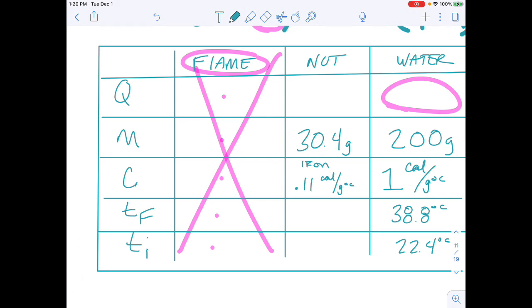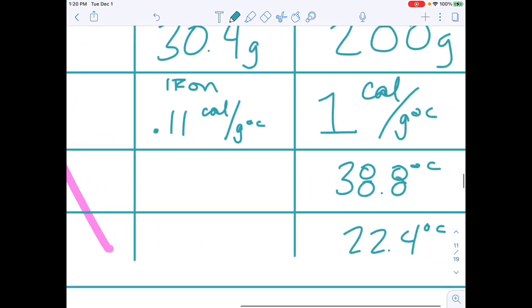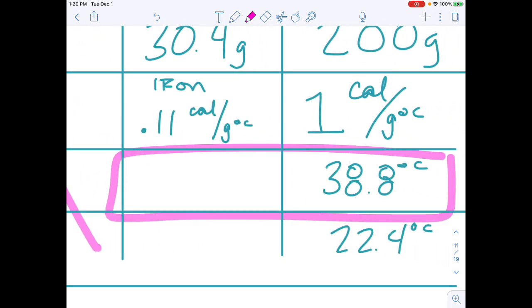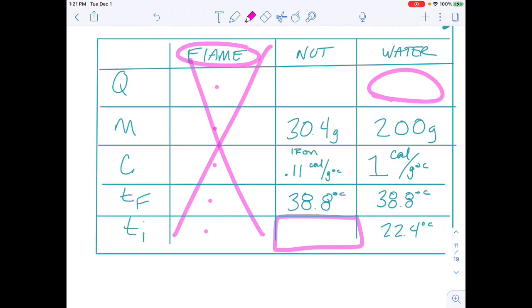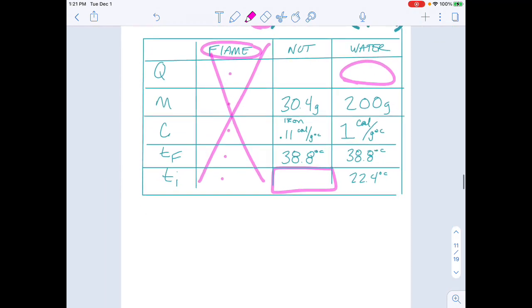And what we could do also is we could say that since they were in a system together, the final temperature of the metal was also 38.8 degrees Celsius, which only leaves us with this: What is the initial temperature of that metal? So now we could start putting all of this into the equation. And it doesn't necessarily matter which side you put it on. I could put the water on this side, and let's say I'm going to put the metal or the nut on this side.